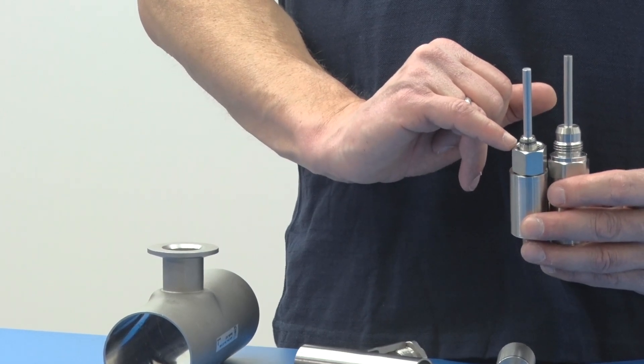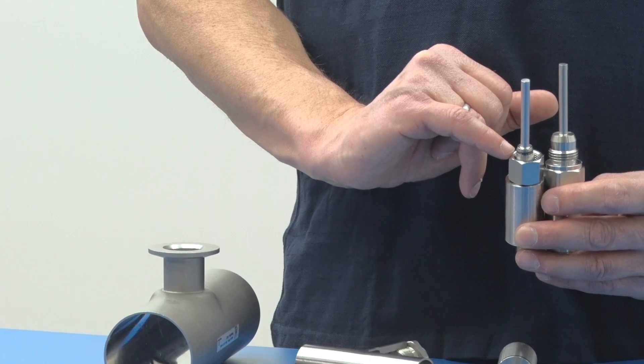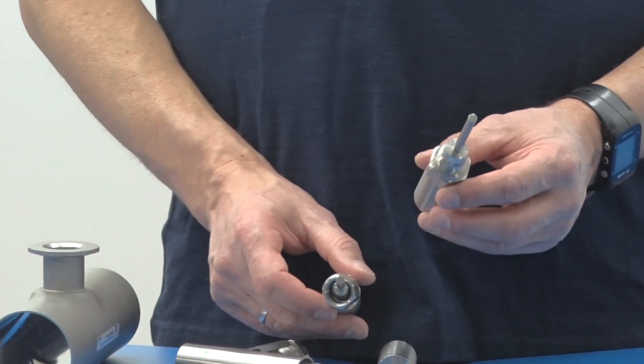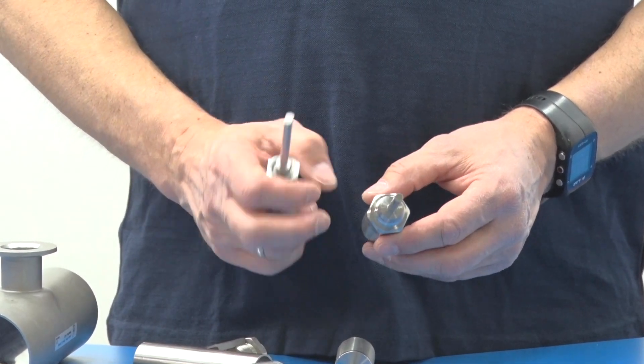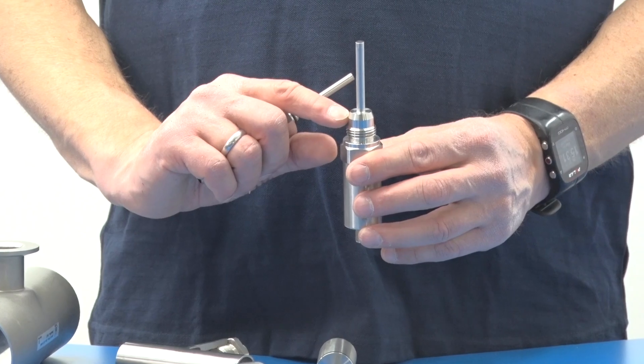The sensor variant with G 1.5-inch connection follows the same principle but sealing is different. Unlike the sensor with sealing cone, the metal conical edge is the sealing in G 1.5-inch connections.